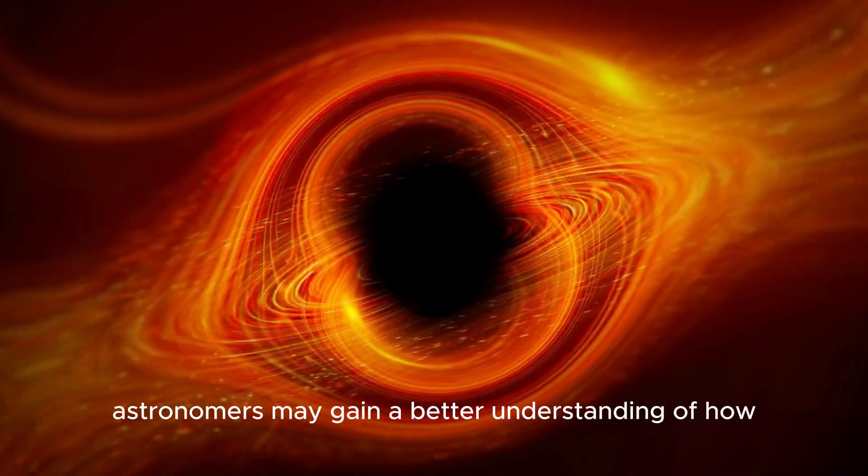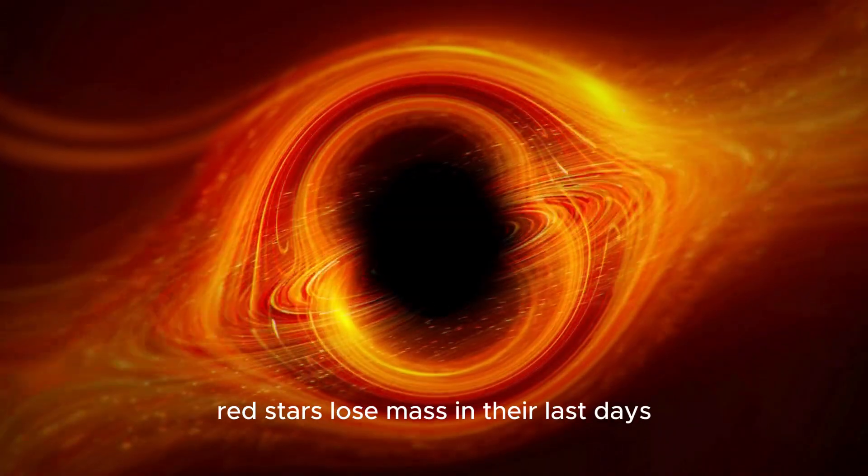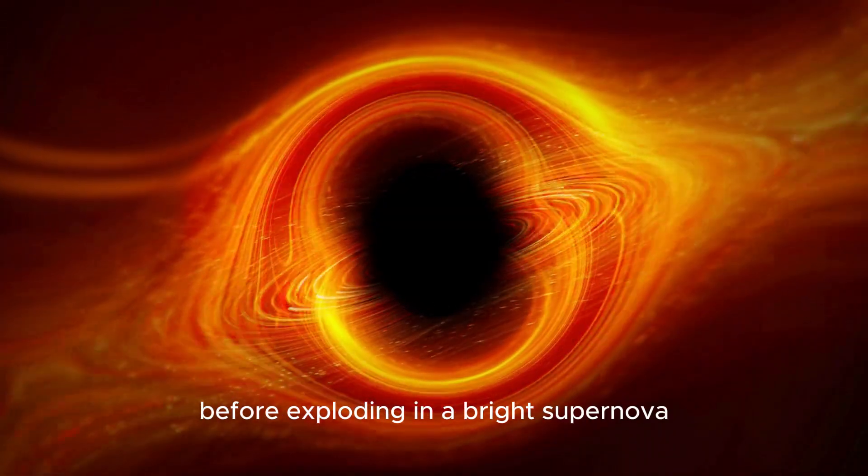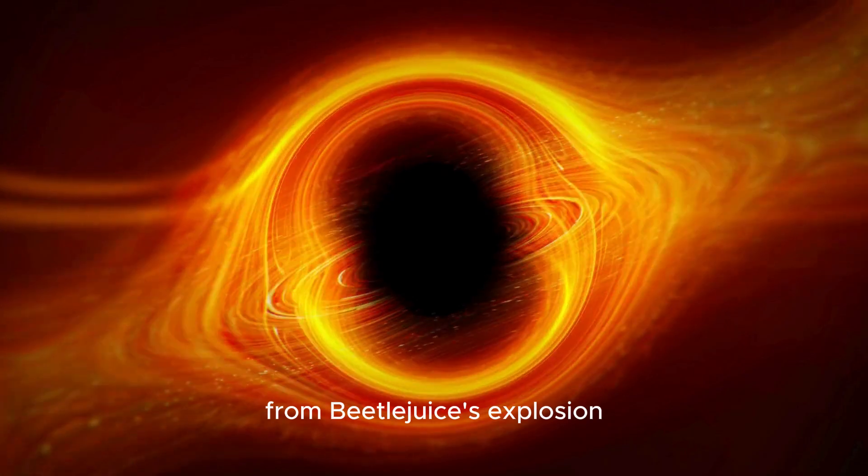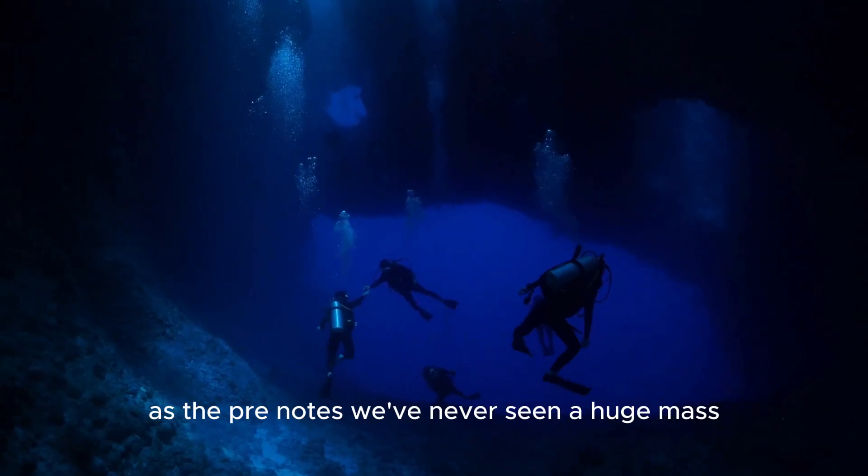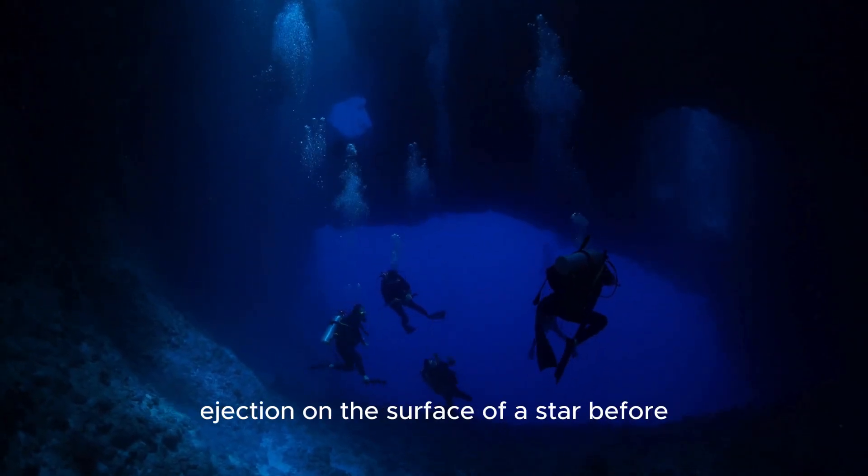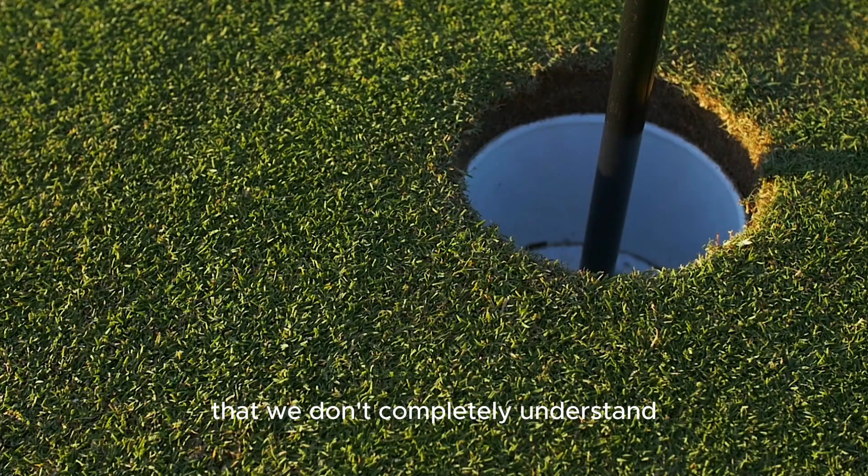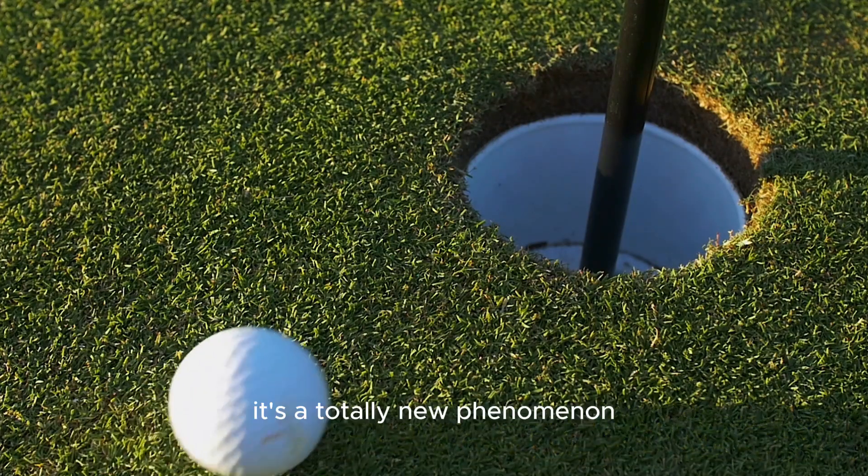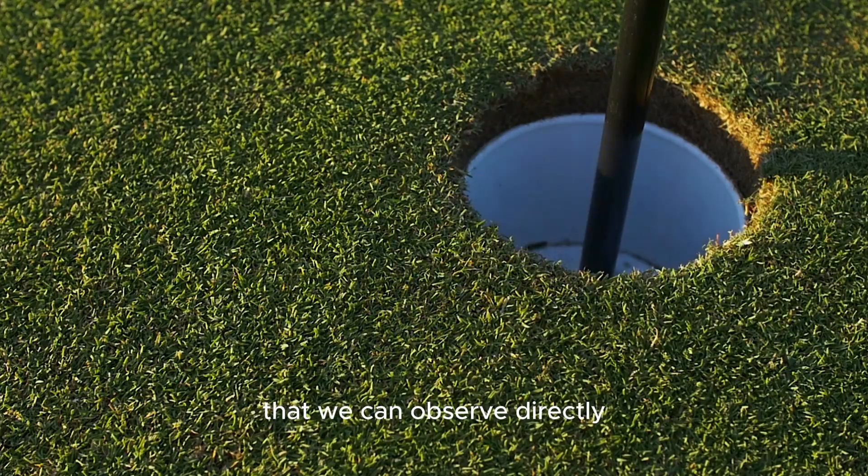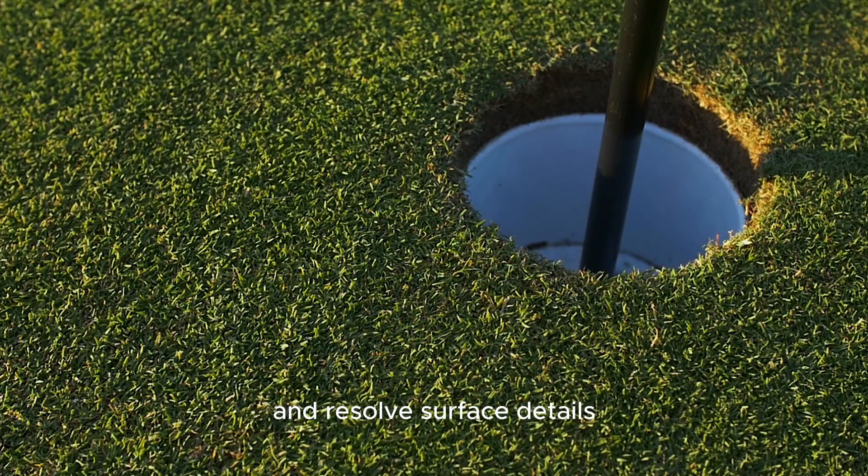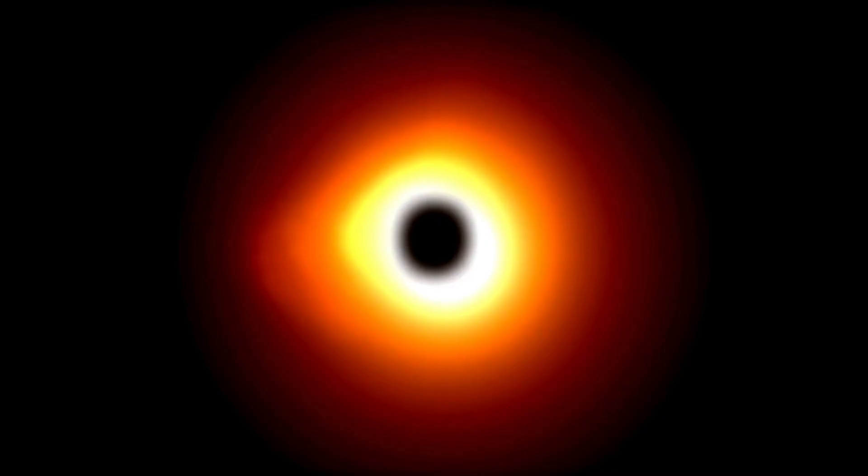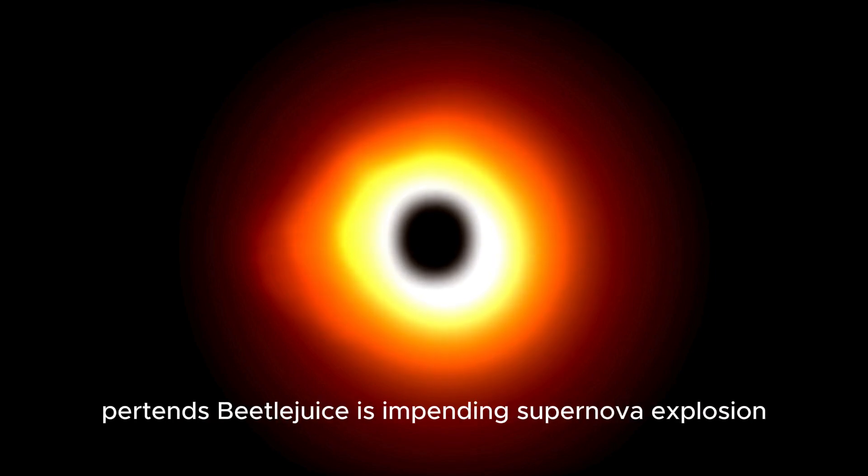Astronomers may gain a better understanding of how red stars lose mass in their last days before exploding in a bright supernova from Betelgeuse's explosion. As Dupree notes, we've never seen a huge mass ejection on the surface of a star before. We are left with something going on that we don't completely understand. It's a totally new phenomenon that we can observe directly and resolve surface details with Hubble. We're watching stellar evolution in real time.